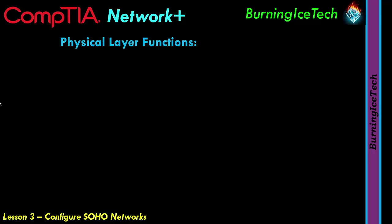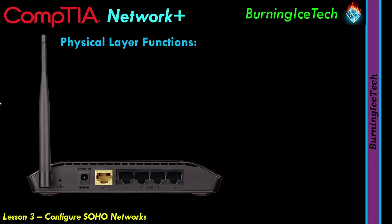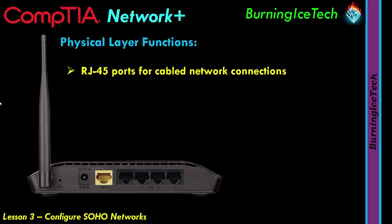Looking at the physical layer functions of this SOHO router — I have a picture on screen — it's predominantly things you can touch, though not exclusively. The physical layer can actually be wireless too, not just cables. Looking at the physical layer: there are RJ45 ports for cabled network connections. There are five of them — the first is your WAN port on the left, which is where your internet connection comes in.